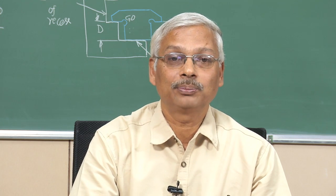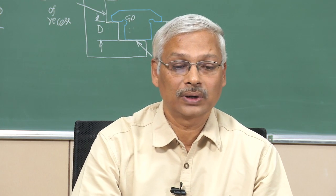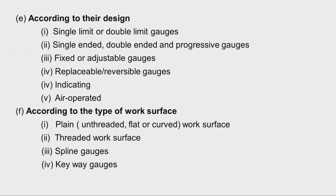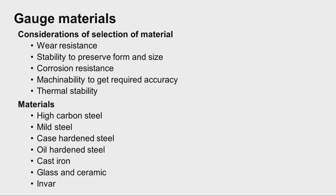According to the type of work surface checked, gauges are classified as plain work surface gauges, threaded gauges, spline gauges, and keyway gauges. Now, what are the gauge materials used for manufacture of gauges?